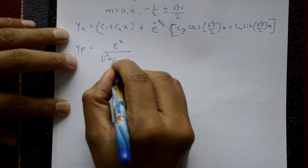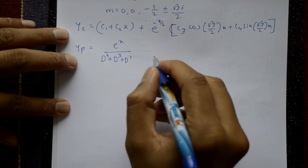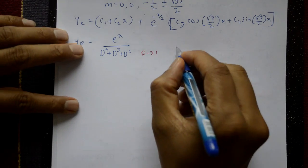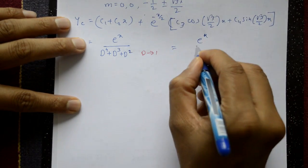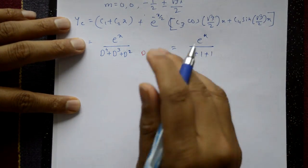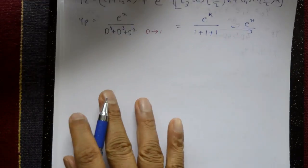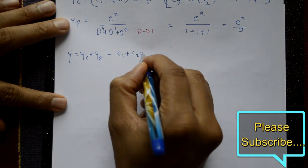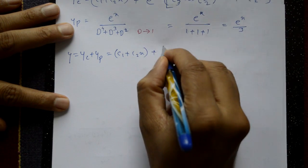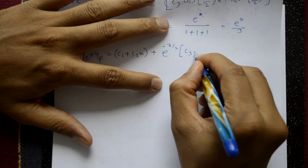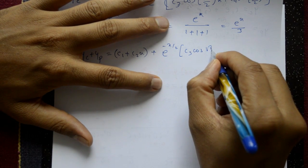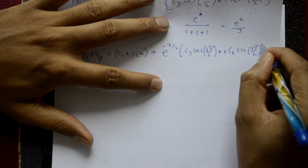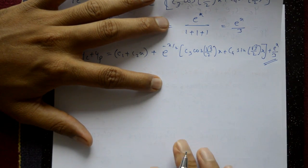For the particular integral, yp = e^x / f(D), where f(D) = D⁴ + D³ + D². Substituting D = 1 (since a = 1): yp = e^x / (1 + 1 + 1) = e^x/3. The complete solution is y = c₁ + c₂x + e^(-x/2)[c₃cos(√3x/2) + c₄sin(√3x/2)] + e^x/3.